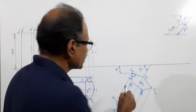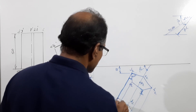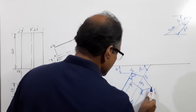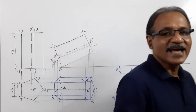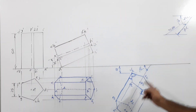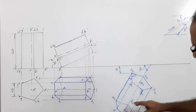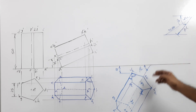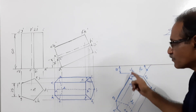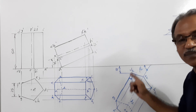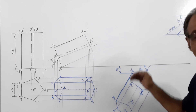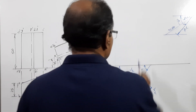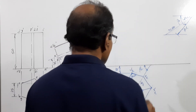You have redrawn the plan such that the plan of the axis makes angle beta to XY — beta calculated so that the nearest corner is 15 mm in front of VP. Now project the final elevation: draw vertical projectors up, draw horizontal projectors, and you will get the final elevation.